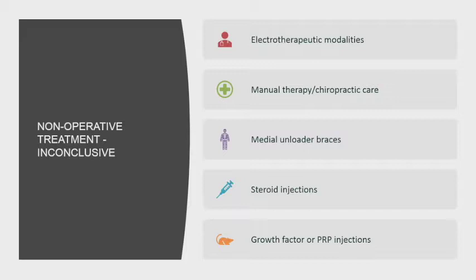Inconclusive treatments are those where studies are very mixed on whether they're useful. Electrotherapeutic modalities like TENS units have extremely mixed evidence on whether they provide any relief or durable benefit. Manual therapy and chiropractic care also have mixed results — chiropractic literature tends to be more positive, orthopedic literature more negative — so there's no real strong recommendation for or against.